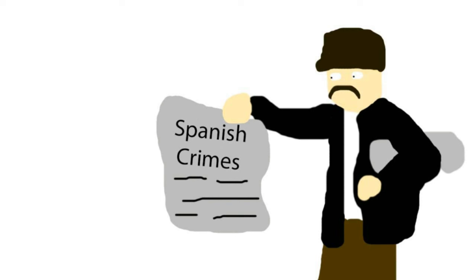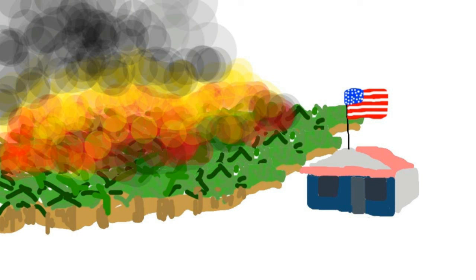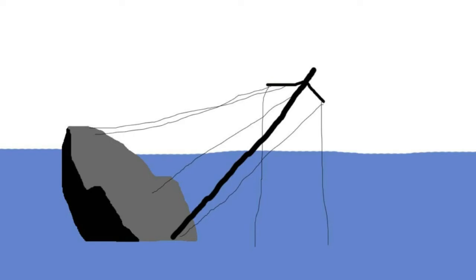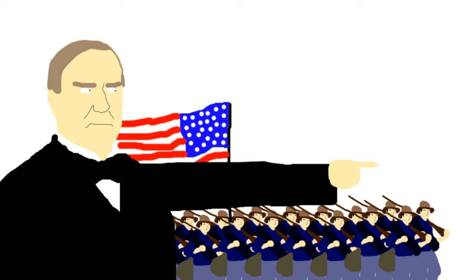Back in Cuba the Spanish were rounding people into concentration camps where many would die of hunger and disease. The yellow press in America used this and a few fabricated claims to rouse the US population to demand war. The US government was also unhappy about the guerrilla warfare as it was causing heavy losses to large American investments on the island. In February 1898 a US battleship, sent to protect US interests, sank in Havana Harbor. The sinking was probably an accident, however the press fabricated the story, and although war wasn't President McKinley's desired option, he was forced into action.